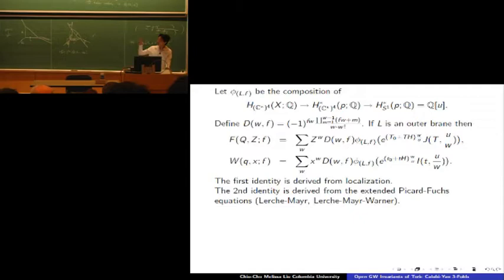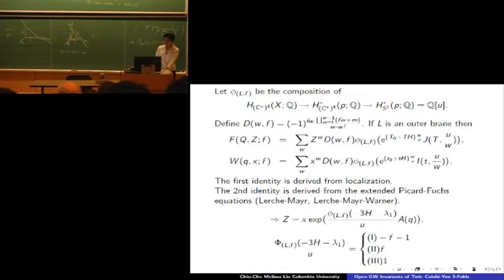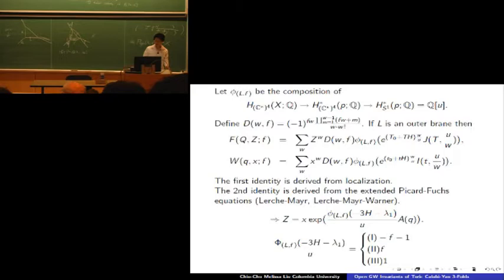You compare the relationship between the open and closed mirror maps and see that capital F and capital W are equal under the open mirror map, where -3 - lambda_1 is the second cohomology class in the equivariant cohomology. After applying phi you get a number times u, and this number is different in the three phases. That completes the proof.